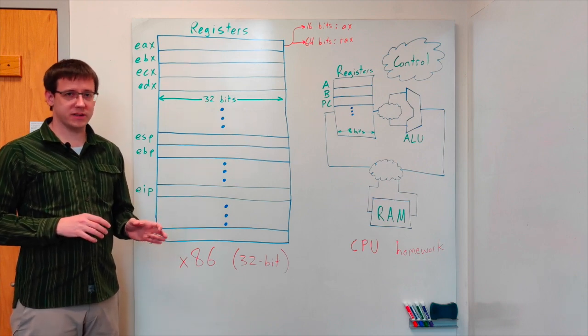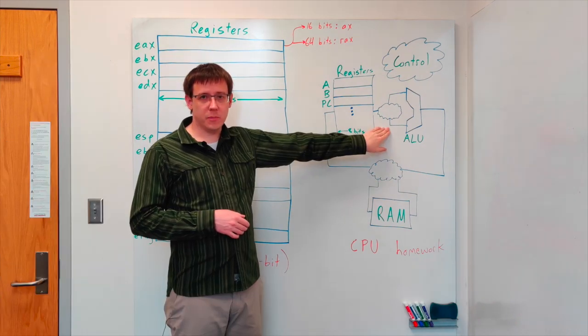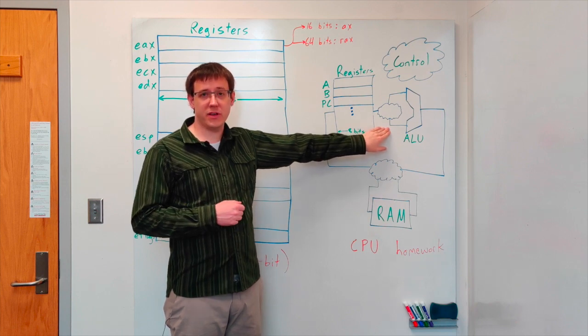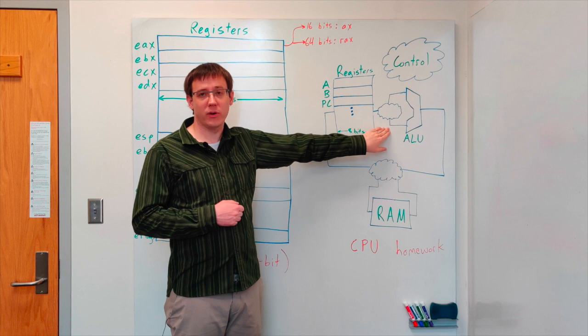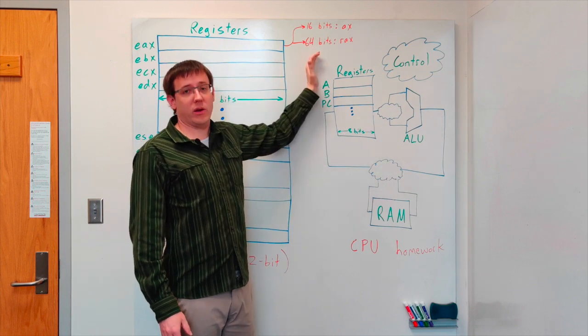But one that's particularly interesting is the flags register. The ALU that you built in Logisim outputs flags like overflow and zero that indicate something about the result of the arithmetic operation it performed. But the CPU that you're building doesn't actually do anything with those flags.